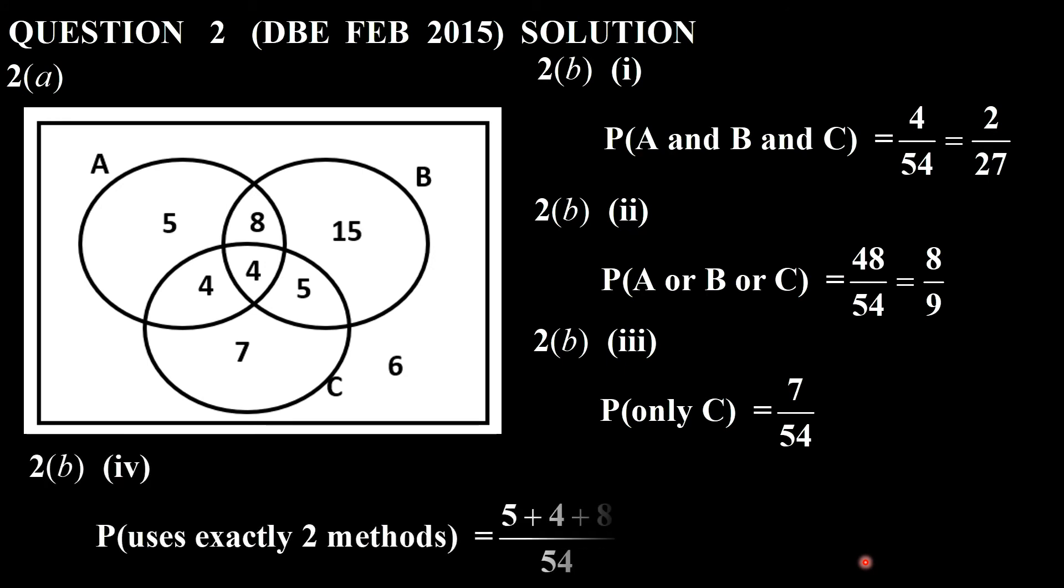And the next question here uses exactly two methods. You see there's exactly two. There's exactly two, exactly two. This one here is not exactly two. There are three methods here. There's only one method. And this is no method. So it's 4 plus 8 plus 5, and 4 plus 8 plus 5 gives me, 5 plus 4 is 9 plus 8, that gives me 17.